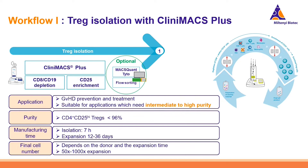For Workflow 1, the CliniMACS Plus platform is used. It performs depletion of CD8 and CD19 and a CD25 enrichment step, with an optional additional step on the MaxQuantito cell sorter if a T-reg subset is being targeted. This workflow is used in graft-versus-host disease, aiming for intermediate to high purity T-regs at around 96% purity. The isolation process takes seven hours, and the expansion phase can last from 12 up to 36 days.